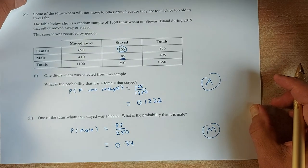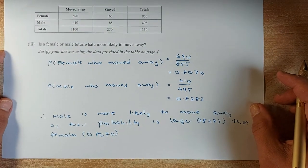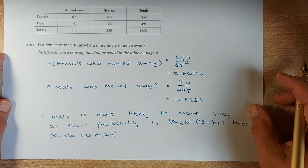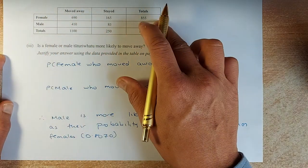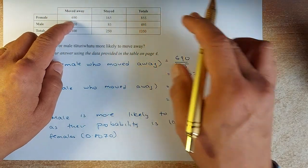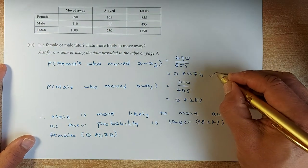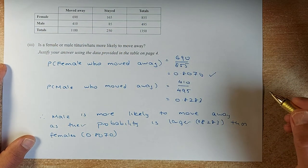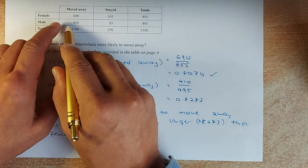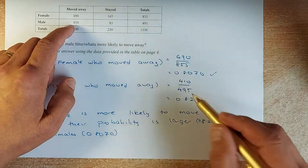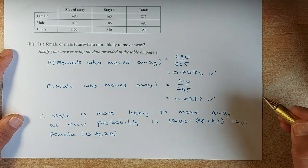Then we should look at the last question. Same table. Is it the male or female Tuturiwhatu more likely to move away? So we have to look at it. Female who move away is going to be 690 out of the female total 855 and the probability comes up to 0.8070. On the other hand, male who move away, you are looking at all the males who move away is 410 out of 495 and you calculate the probability as 0.8283.